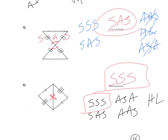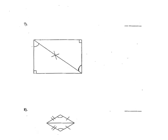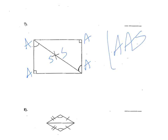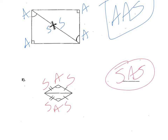Number seven: it appears we have an angle, an angle, and a side in one triangle, and an angle, an angle, and a side in the other — so I'm going to use angle, angle, side. The reflexive piece was already used to show those two sides were congruent. Number eight: it appears we have a side, an angle, and a side in each triangle — so we're going to use side, angle, side.